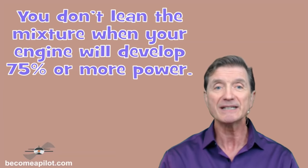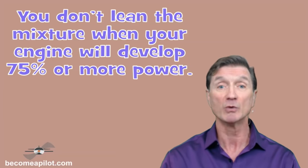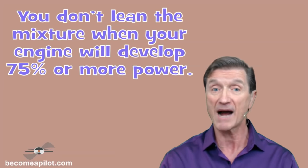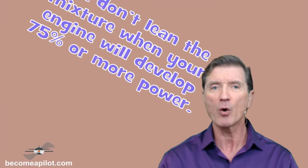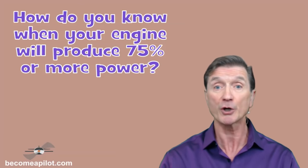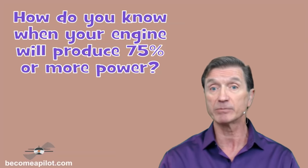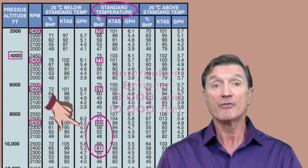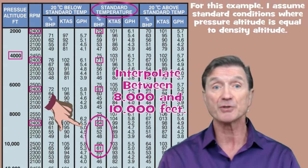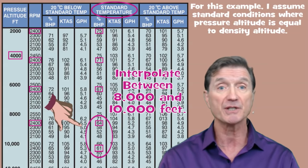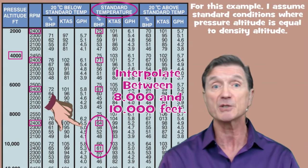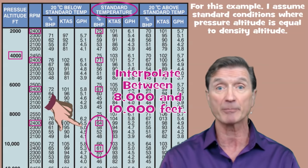So here's the rule, and keep in mind that this is a generalization, but it works pretty well for the typical general aviation airplane. You don't lean the mixture when your engine will develop 75% or more power. How do you know when your engine will produce more than 75% power? You look at your performance charts. In the example above, with a 9,000 foot plus density altitude, the 165 horsepower Stinson engine, if properly leaned, is probably producing 60-65% of its rated power.